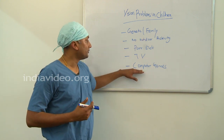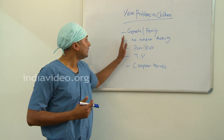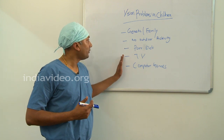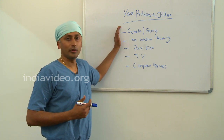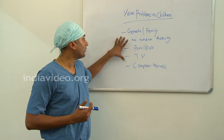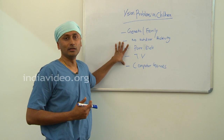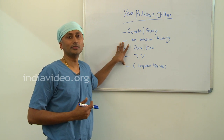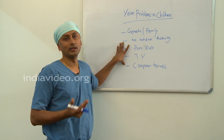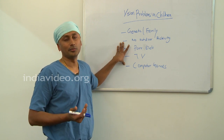With all these factors, we can understand that there are modifiable and non-modifiable factors, and the modifiable factors are more. These are the reasons why our children have more vision problems.